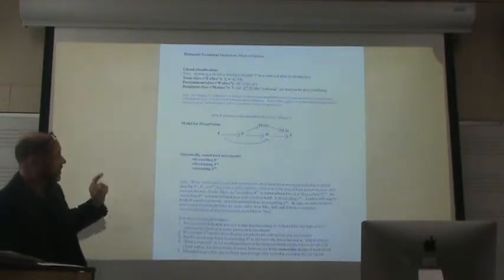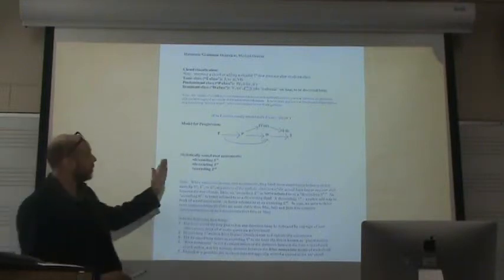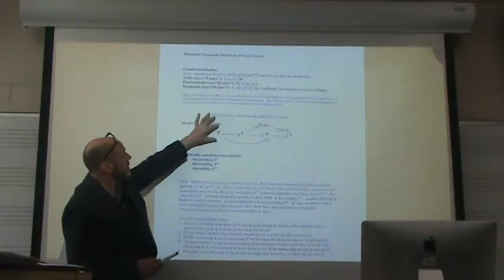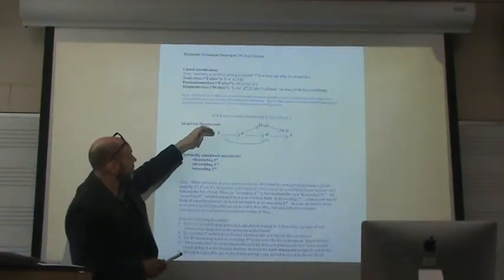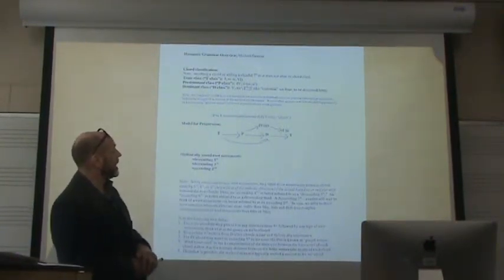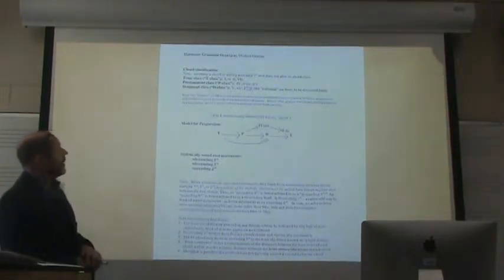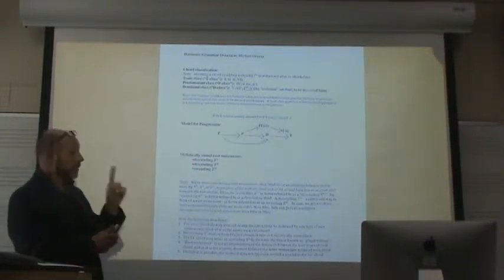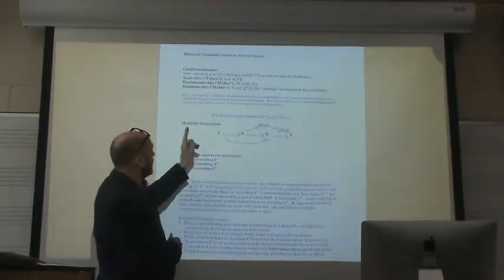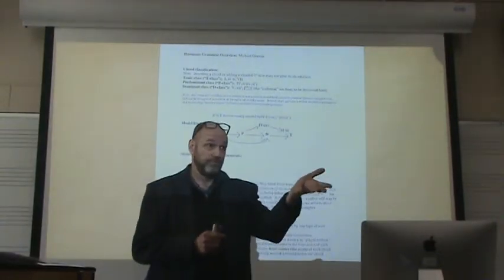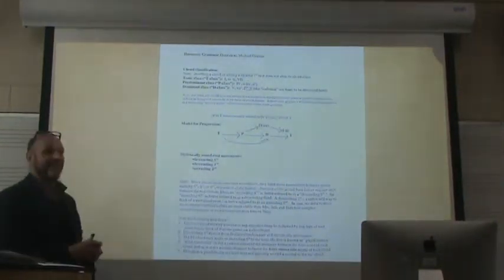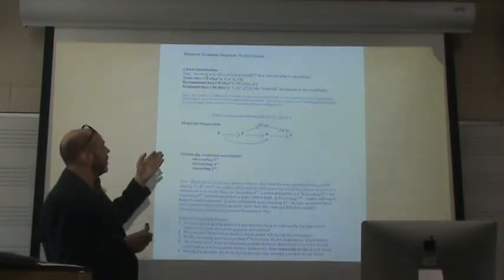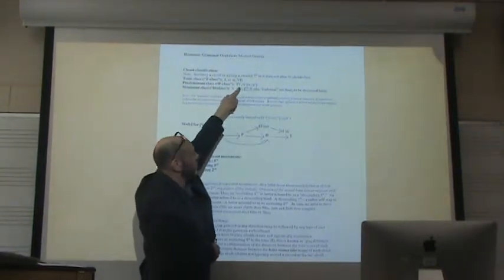Now here's an interesting thing. If we take our chord classes and we go through this model, we're going to see that these motions from tonic to predominant, predominant to dominant, and dominant to tonic also end up producing, for the most part, these root movements. Let's try this out. So I'm just going to pick our two tonic classes. So if we were to go from one to four.